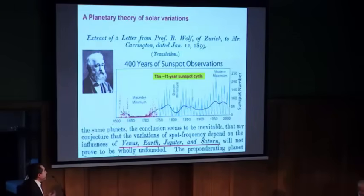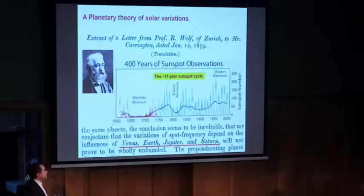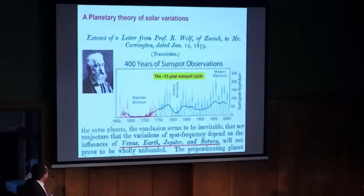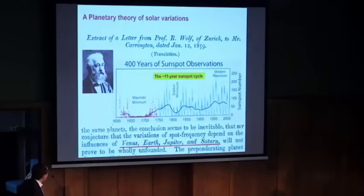Do we have an explanation for this oscillation? People say these oscillations are found in the ocean and so on, but we need to understand what is the origin of the oscillation. And this brought me to study the planetary theory of climate and solar variation.